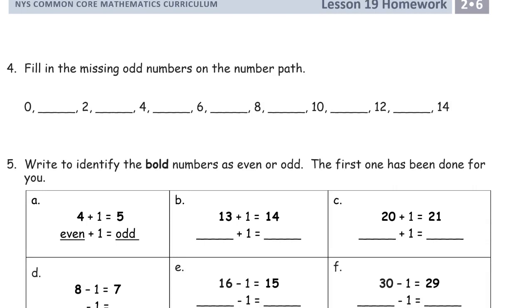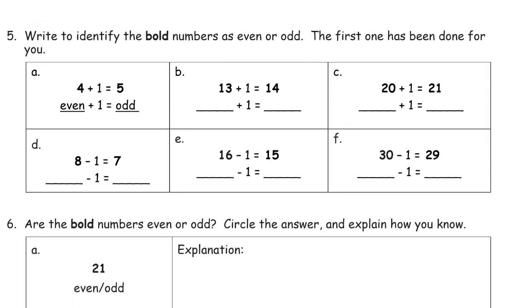Fill in the missing odd numbers on the number path. So you can, don't think about this often, but you can count odd numbers by 2 also. They're just different numbers than we're used to counting. So that's going to be 1, 3, 5, 7, 9, 11, 13. And you'll see the same progression here. 1, 3, 5, 7, 9. Look at the 1s digits. 1, 3, and then 15 would come next. 5, right?